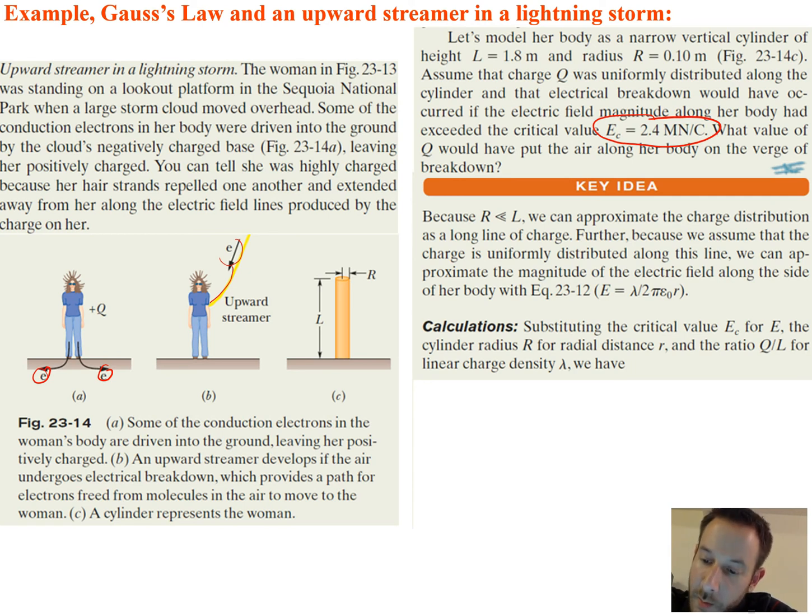Something to think about. Since R is much less than L, we can approximate the charge distribution for a long line of charge. So basically, we can use the equation that we just derived. Since it's uniformly distributed, that also lets us use this equation.